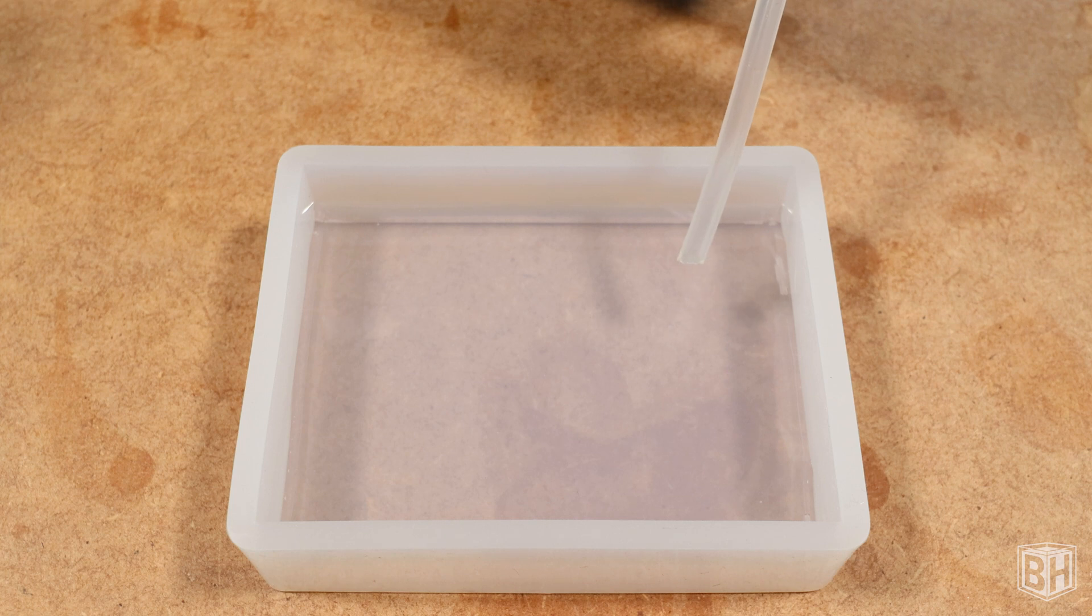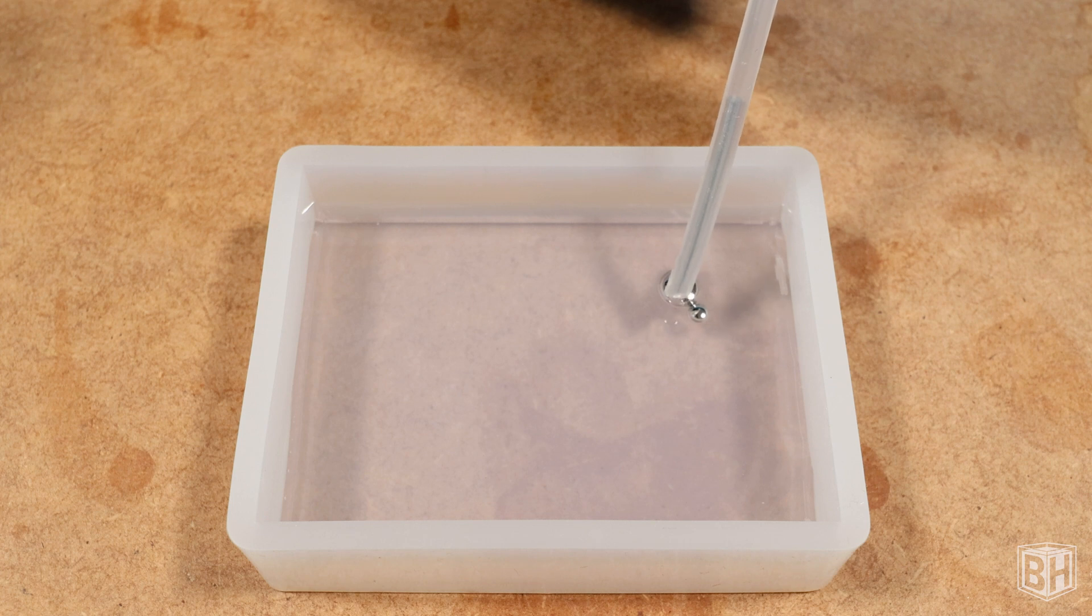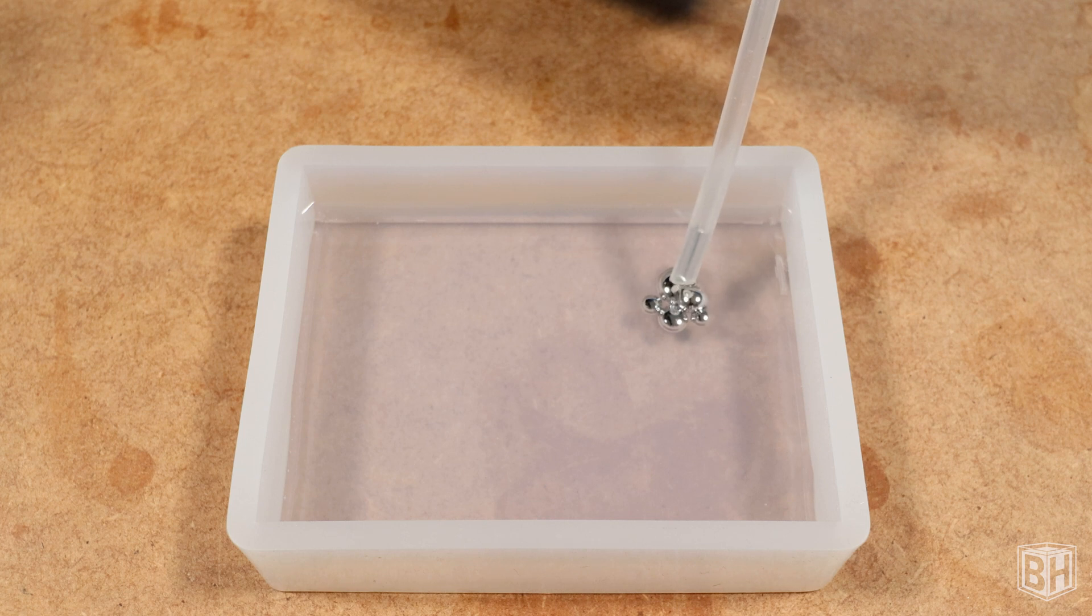The first thing I'm going to do is add drops of mercury to one half of this mold in the shallow layer of resin I've just poured. I'm then going to fill the mold and add drops of mercury to the other side to see if there is any difference between adding drops of mercury in resin versus adding drops to the surface of the resin.